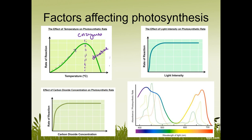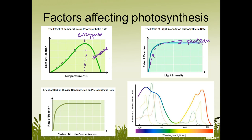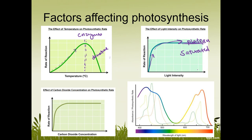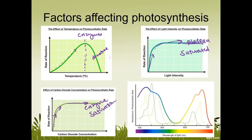For light intensity: the more light there is, the faster photosynthesis happens, up until a point where the rate plateaus. The rate levels off because the enzymes are all saturated — they're working as fast as they can, and more light makes no difference. For carbon dioxide concentration: similarly, more CO2 increases the rate of reaction until enzyme saturation, at which point the rate plateaus again.